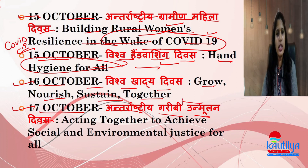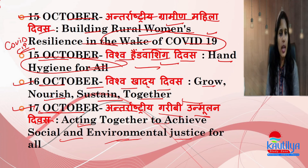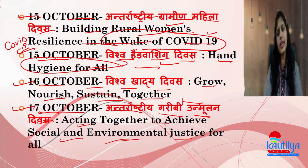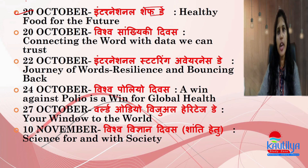17th October is International Day for the Eradication of Poverty. The theme is 'Acting Together to Achieve Social and Environmental Justice for All,' meaning we must collectively provide social and environmental justice to everyone.